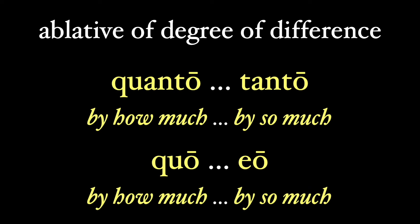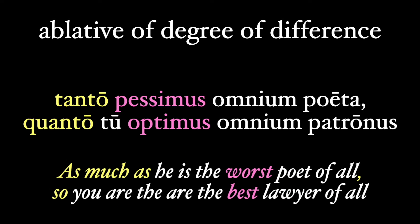The ablative of degree of difference is used in the correlatives quanto/tanto and quo/eo. Catullus is talking about Cicero in poem 49, when he sets up the possibly ironic correlation: tanto pessimus omnium poeta, quanto tu optimus omnium patronus — as much as he, Catullus, is the worst poet of all, so you are the best lawyer of all. Or, more literally, 'by so much' and 'by how much,' but that doesn't sound as nice.